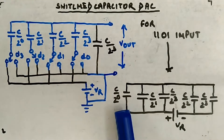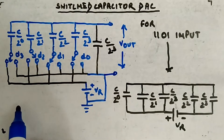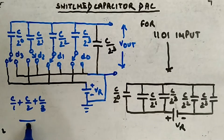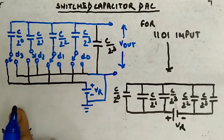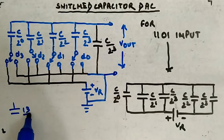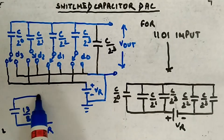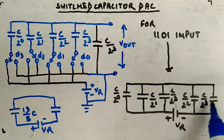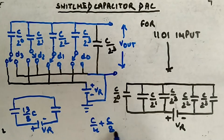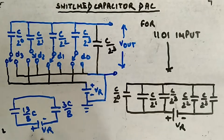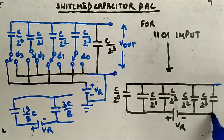The total capacitance on the positive side: C divided by 1 plus C divided by 2 plus C divided by 8 — the LCM is 8 — gives 8 plus 4 plus 1 = 13 divided by 8, so 13C/8. The circuit has 13C/8 on the positive terminal side of Vr. On the negative side, C divided by 4 plus C divided by 8 gives 3C/8. From here you take your output Vout.